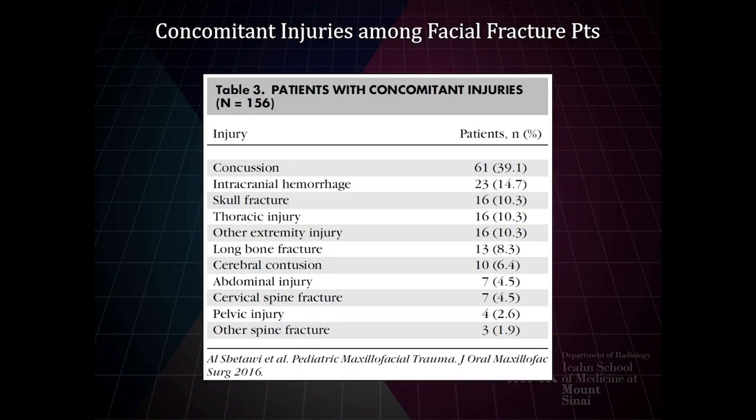When patients have facial injuries, one should look for concomitant trauma as well. The top findings — concussion, intracranial hemorrhage, skull fracture, and cerebral contusion — account for almost 70% of concomitant injuries. Many patients who get facial trauma will get a head CT, and one could make the argument that every patient with significant facial trauma should get one because of the coincident injuries those patients can have.